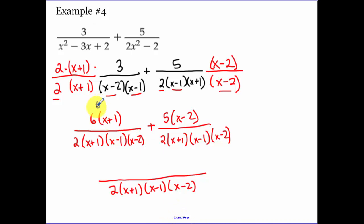Now distribute under your one denominator, so you don't have to write it again. You might want to just simplify above this, 6x plus 6, and then I'm going to have a plus a 5x minus a 10. So 6x plus 5x, I get an 11x, and 6 minus 10, I get a minus 4.